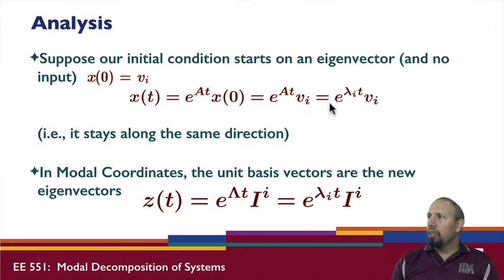That is, x(t) remains along that same direction. Here I have a constant value times that, but it remains on that same direction. If I start on an eigenvalue - I'm sorry, start on an eigenvector - I stay on an eigenvector.